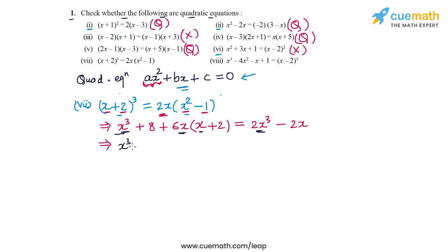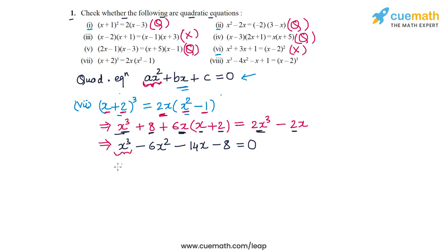Bringing all terms together: x³ − 6x² − 14x − 8 = 0. This equation is clearly not a quadratic equation because of the x³ term. So the equation in Part 7 is not a quadratic equation.